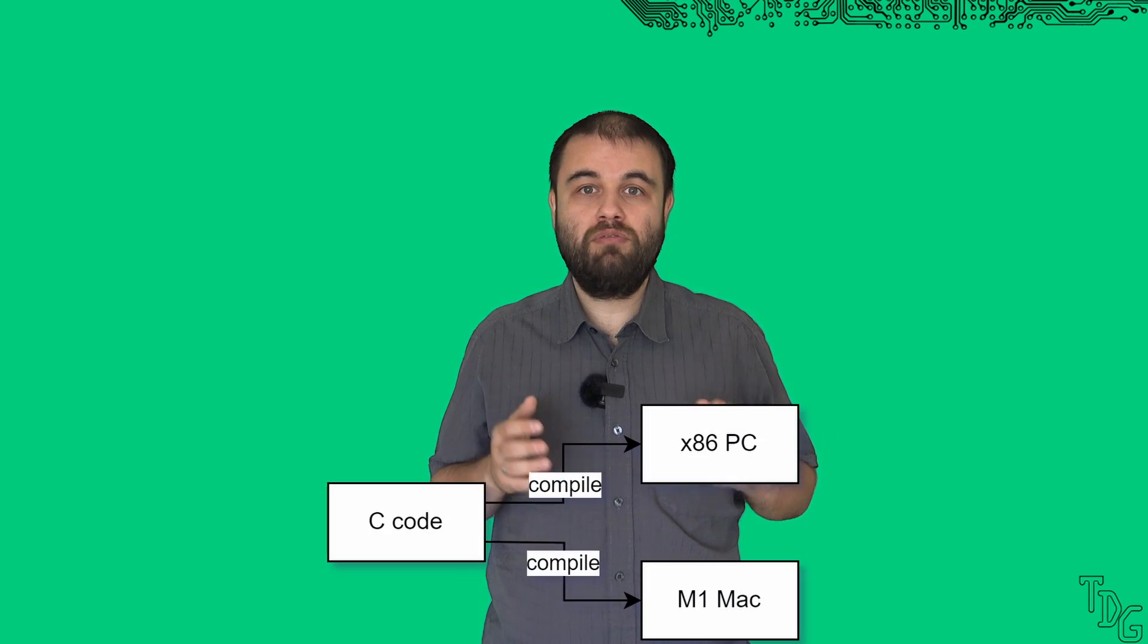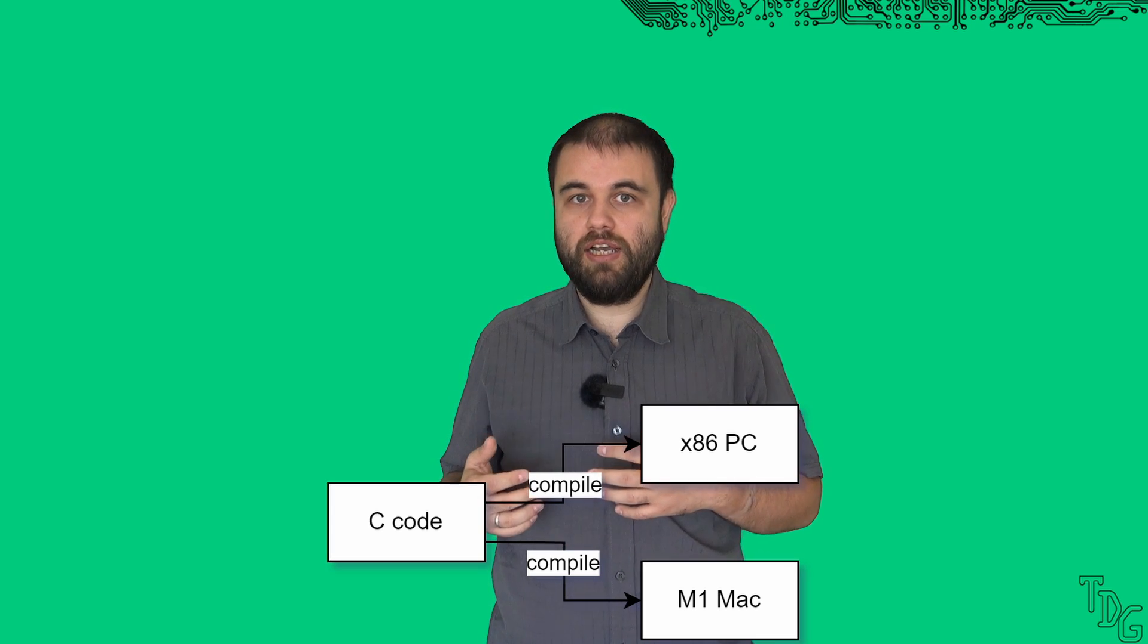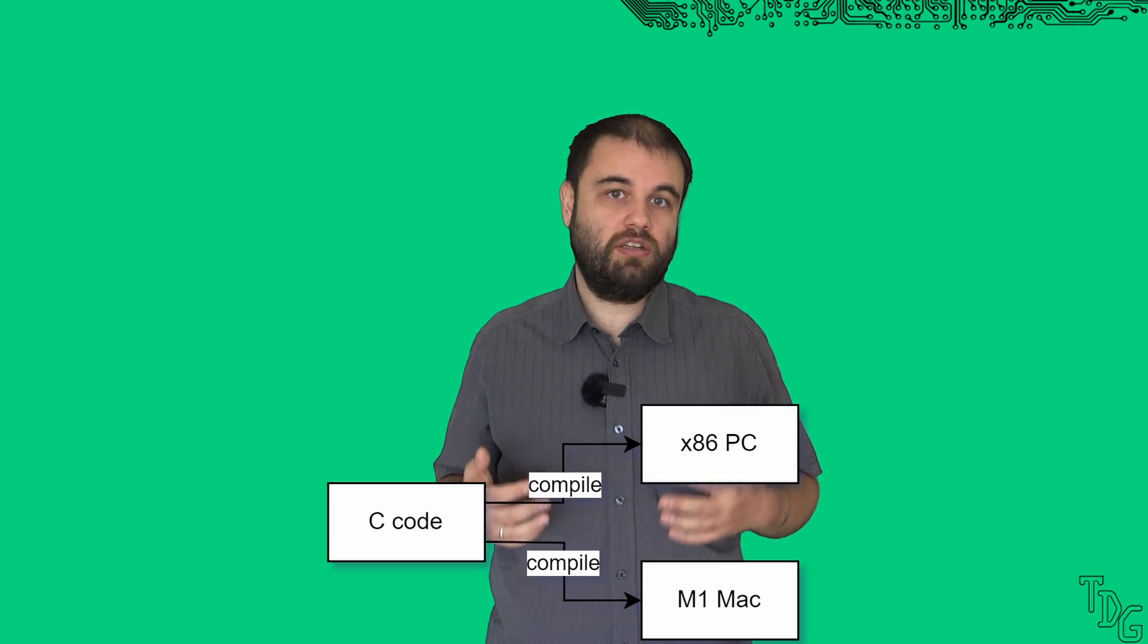The level of a programming language means its abstraction level from the running hardware. C, for example, is a high level programming language compared to assembly, because a well-written C code can be run on different machines. You don't need to rewrite, just recompile for a different target. Python is even higher level than C.